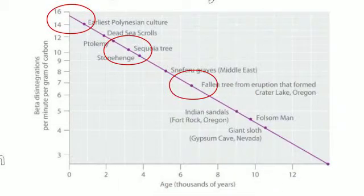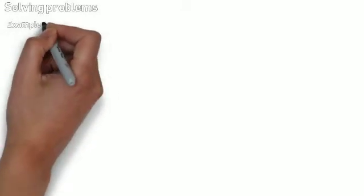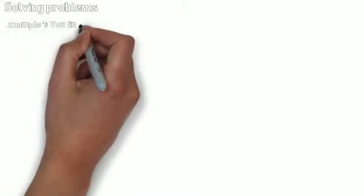So even though the initial decay rate is 15 disintegrations per minute, it decreases over time. And this is how we're going to measure how old something is. So here's a sample problem. So we're going to go through solving a problem here.